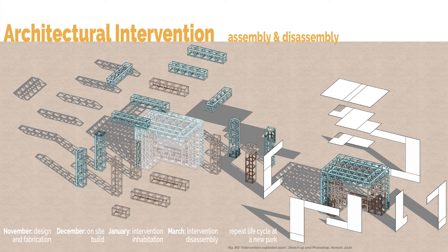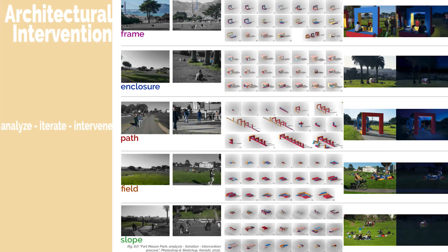The interventions are intended to be designed and fabricated in November, built in December, inhabited January through March, disassembled for summertime, and brought back to storage until the next winter. The affordable materials may have a lifespan of two to four interventions.